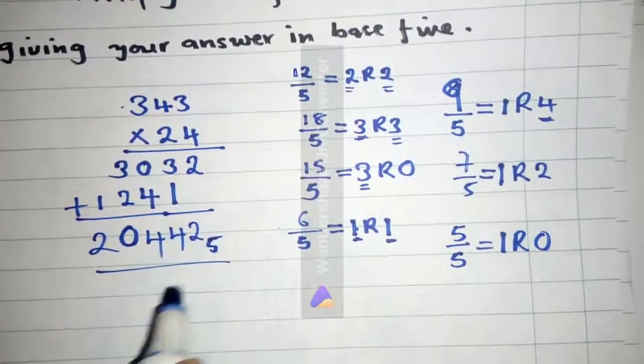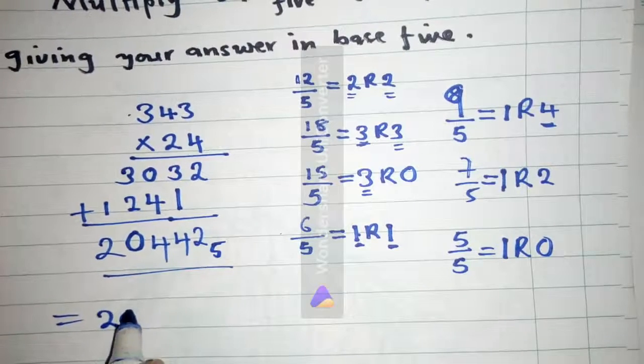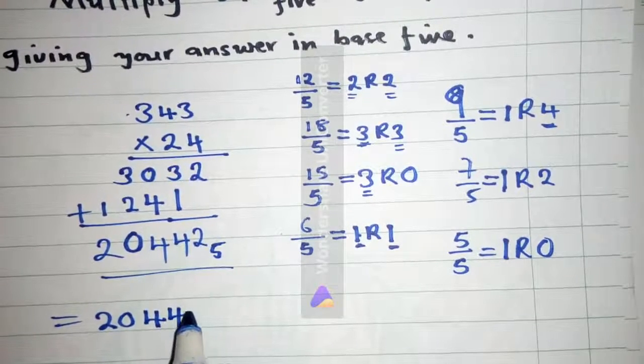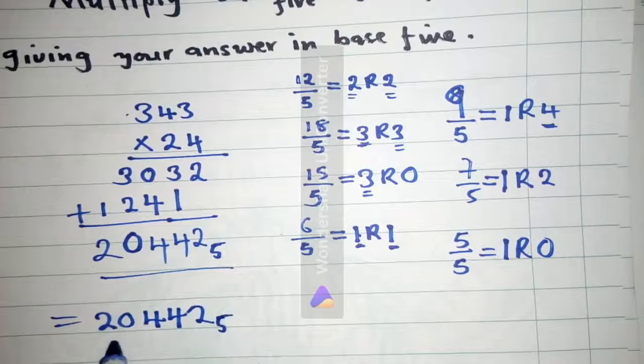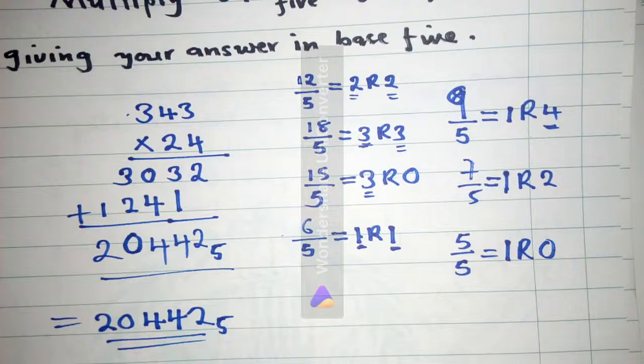Base 5, this is our answer. So our answer is 2, 0, 4, 4, 2 base 5. Thank you for watching, watch more videos, and subscribe on my YouTube channel. This is Sitchan B Jacob.